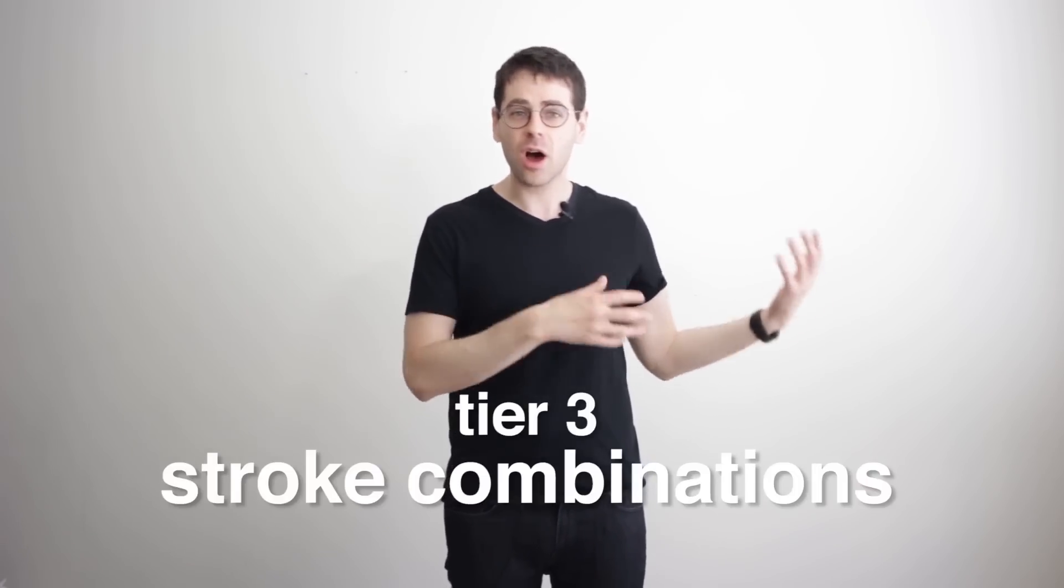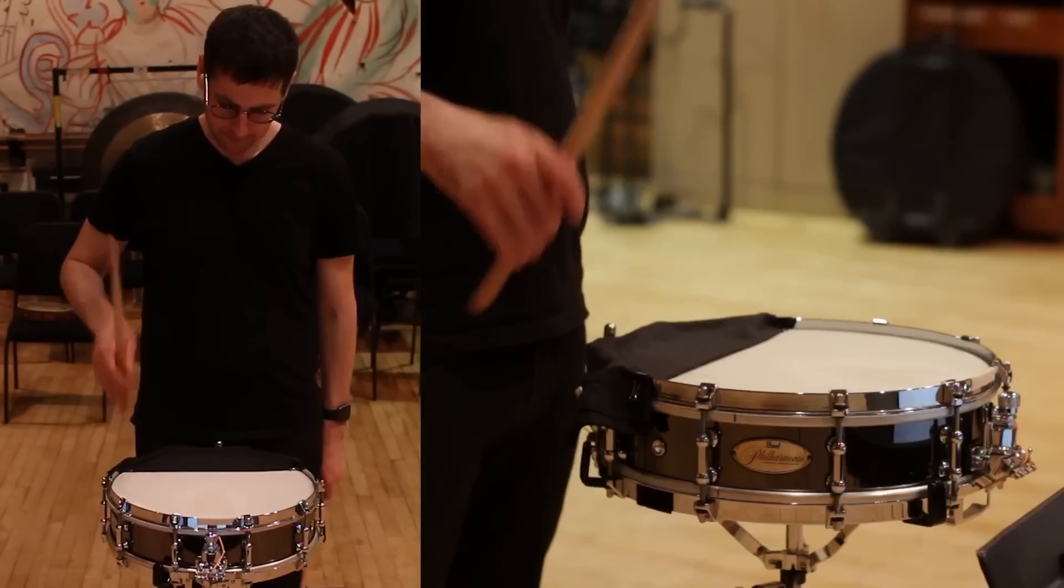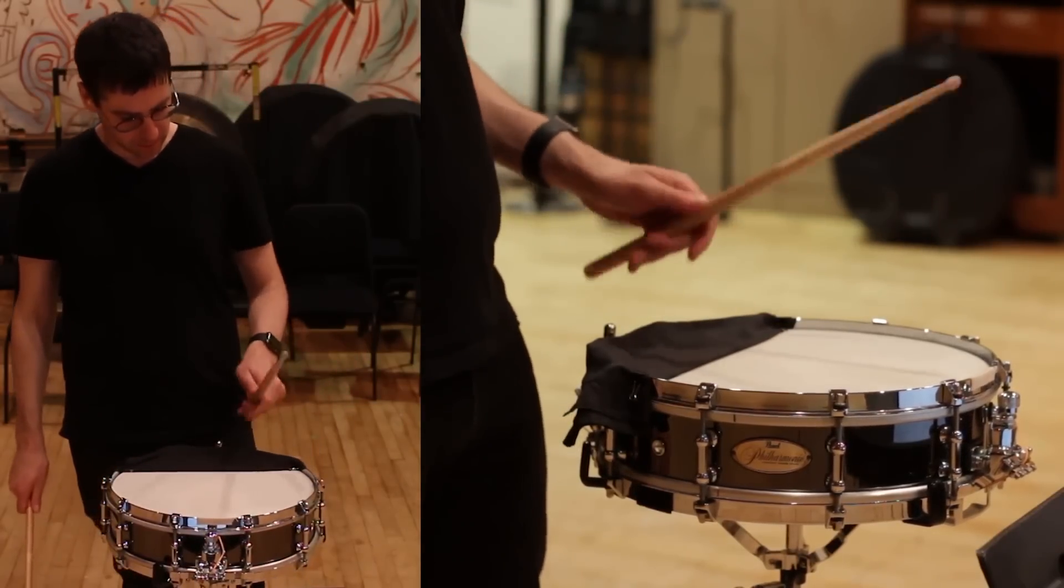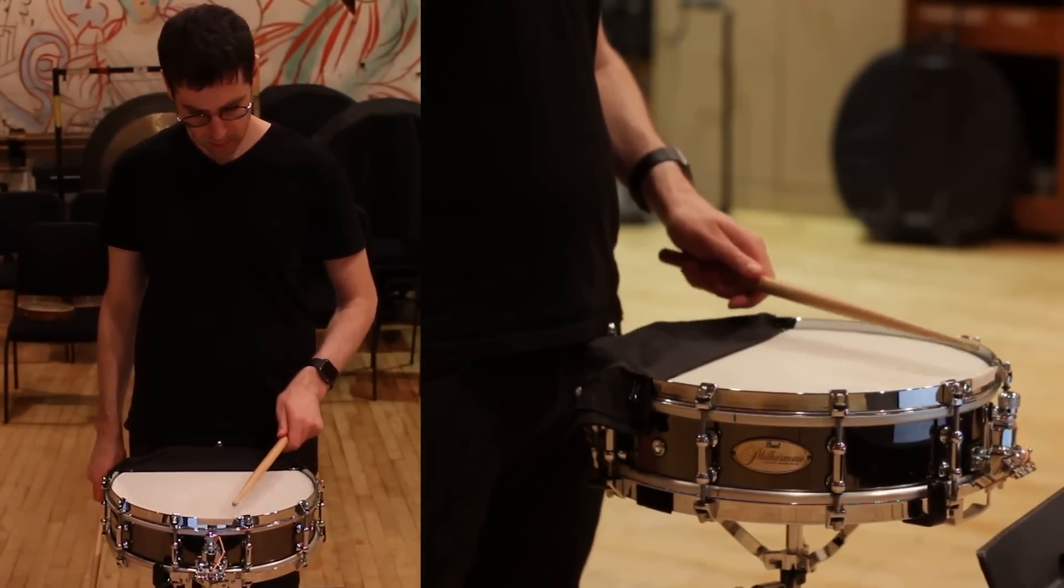The third tier of stuff that you work on in your warm-up is basically combinations of what you worked on before. Whatever technical stuff is coming up in your music that you're having trouble with, if it's that part of Delacluse, if you're working on Lieutenant Kiji, four-stroke ruffs are a perfect example.